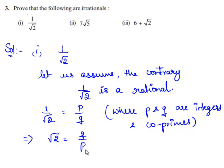Since q and p are integers, q upon p is a rational number. So this statement gives that root 2 is also a rational number.